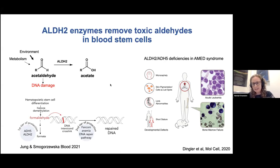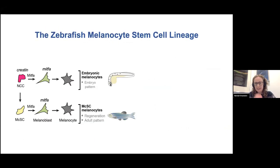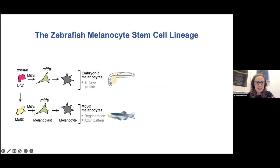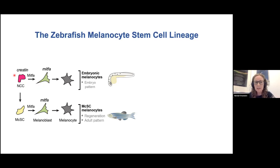We're a melanocyte melanoma lab, and I wanted to see whether ALDH2 is important in melanocyte stem cells. In zebrafish, there are two different waves of melanocyte development. The first wave is directly from neural crest cells early in development — a neural crest cell expressing the multipotent pan-neural crest marker crestin starts activating the melanocyte master transcription factor MITFA, kickstarting differentiation into melanoblasts and then melanocytes, providing the embryo pattern.